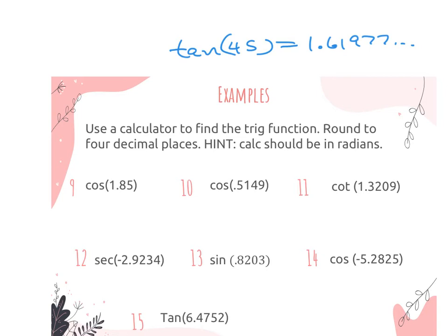You could also change settings on the basic calculator — there's a button at the top that says DRG. Touch that, highlight 'radian,' hit enter and get out. All we're doing is hitting the trig button, putting in the radian value, and hitting enter. So the first one: cosine of 1.85. We're going to round to four decimal places — negative 0.2756.